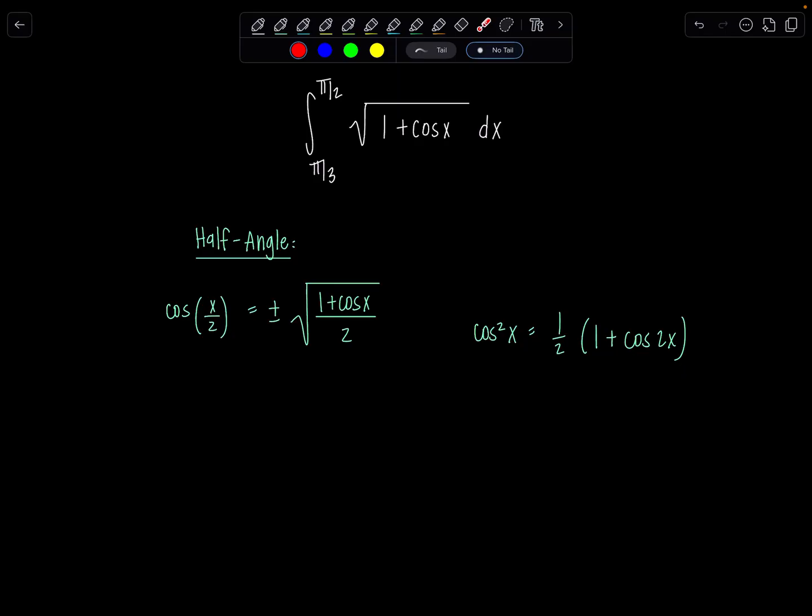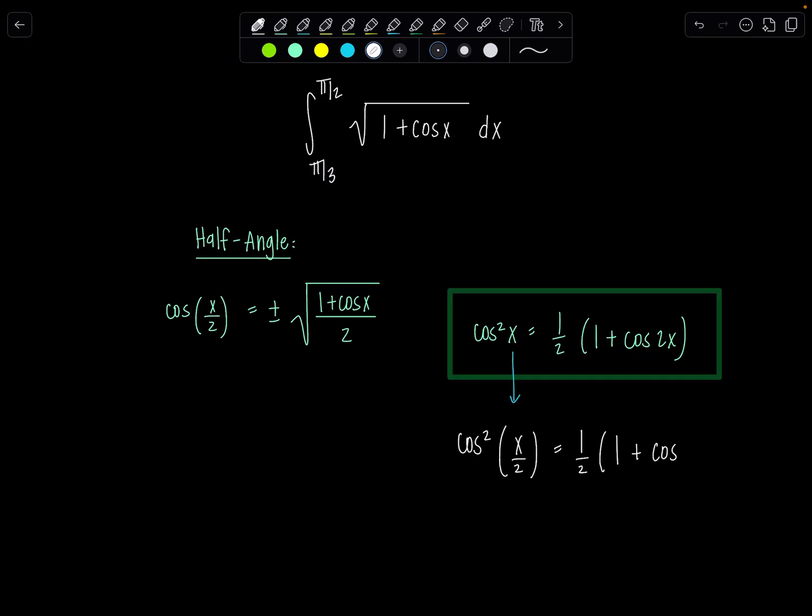Let me show you how you can get from one to the other to suit your needs. Basically, take this one that we work with more frequently in Calculus 2 when we need to integrate, and I'm going to replace x with (1/2)x. So now what I have instead is cos²(x/2) = (1/2)(1 + cos x), since 2 times (1/2)x is x. I just scaled everybody down, cut them in half.